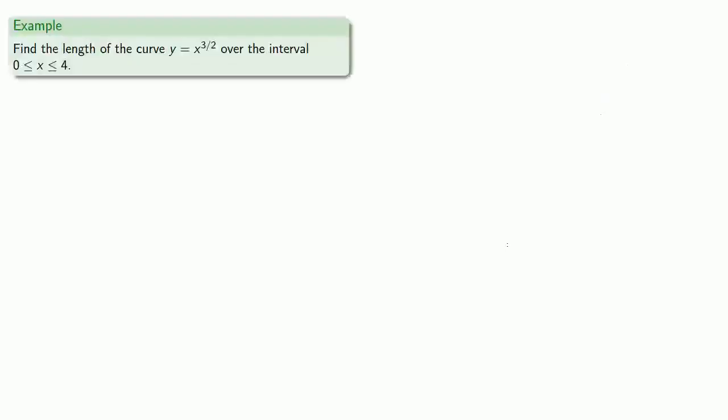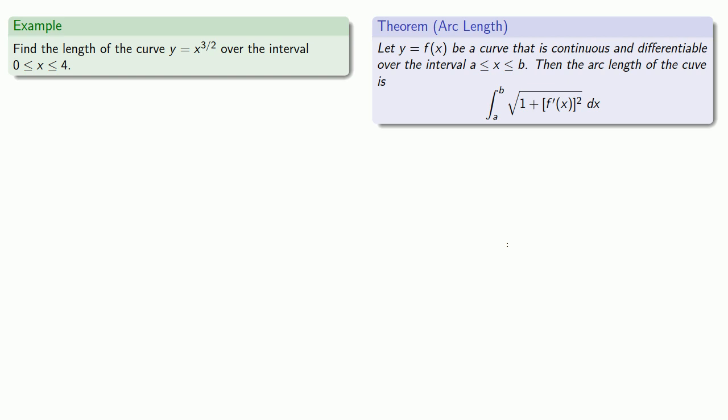For example, let's find the length of the curve y equals x to the power 3/2 over the interval between 0 and 4. So our arc length is going to be the sum of the representative lengths, square root 1 plus f prime of x squared. And our sum is going to go from the start of the curve at x equals 0 to the end of the curve at x equals 4.